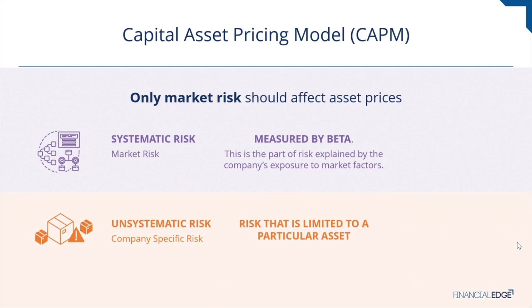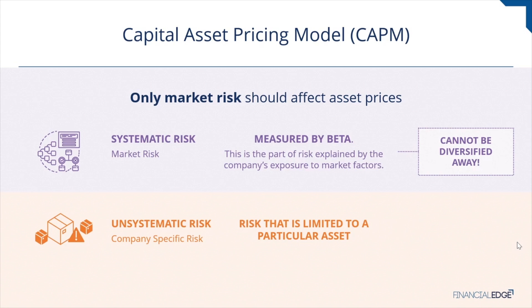Examples of non-systematic risk could include the failure of a drug trial, major oil discoveries, or an airliner crash. Investors are capable of avoiding non-systematic risk through diversification by forming a portfolio of assets that are not highly correlated with one another. CAPM asserts that the expected return of assets varies only by their systematic risk as measured by beta.